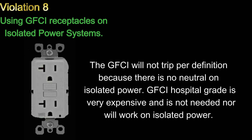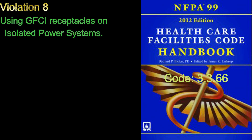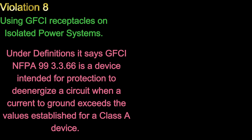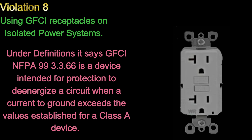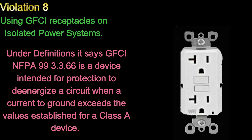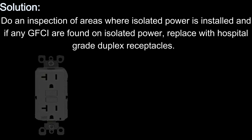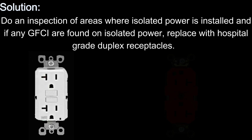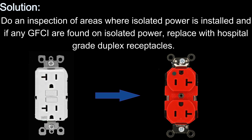Number 8: Using GFCI receptacles on isolated power systems. The GFCI will not trip per definition because there is no neutral on isolated power. GFCI hospital grade is very expensive and is not needed nor does it work on isolated power. Code 3.3.66 — under definitions, NFPA 99 3.3.66 states a GFCI is a device intended for protection to de-energize a circuit when a current to ground exceeds the values established for a class A device. Solution: Do an inspection of areas where isolated power is installed, and if any GFCI receptacles are found on isolated power, replace them with hospital grade duplex receptacles.